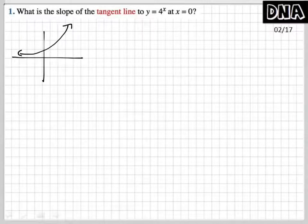And since it wants to know the slope at x equals 0, it's asking, at this point right here where x equals 0, what is the slope of this tangent line?